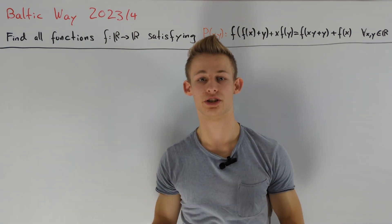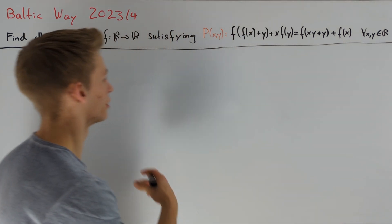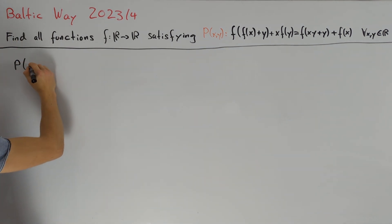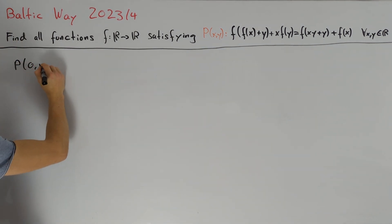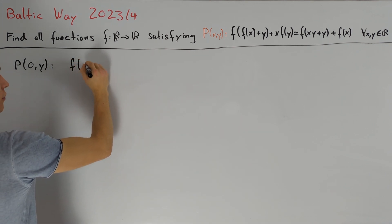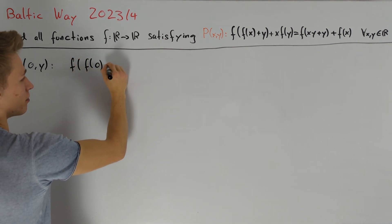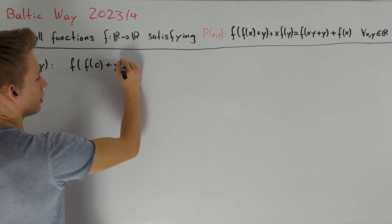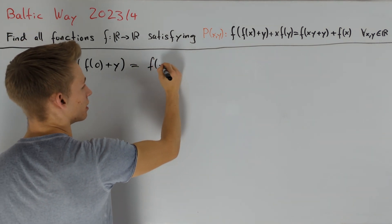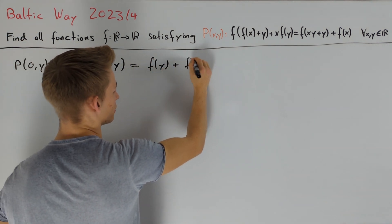As usual when dealing with functional equations, it's a good idea to plug in the value 0. Setting x=0, we get that f(f(0) + y) = f(y) + f(0).